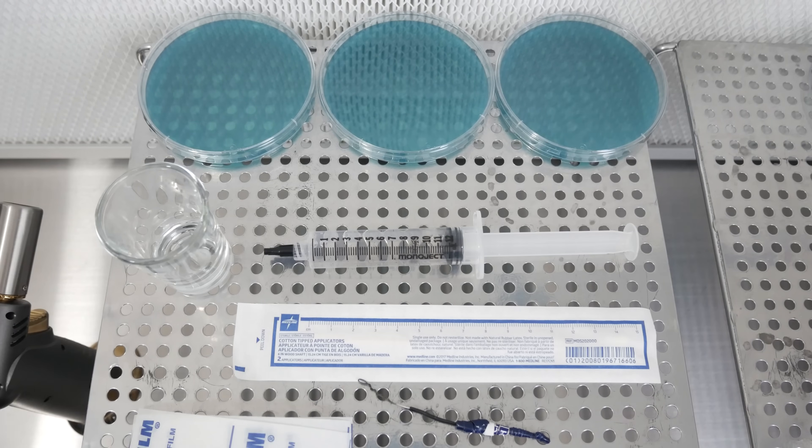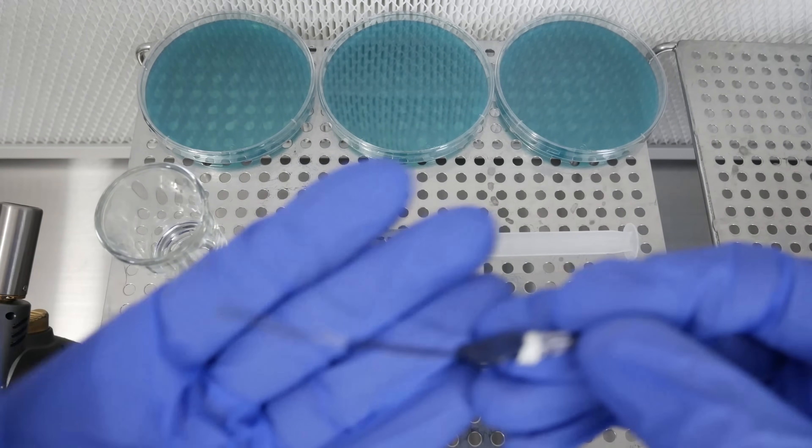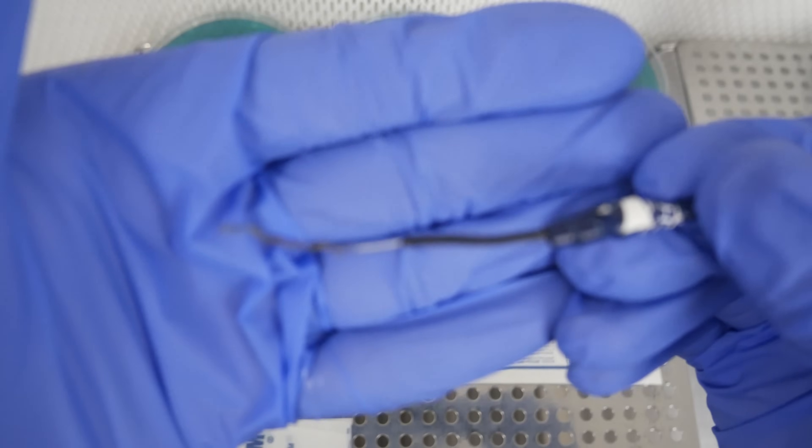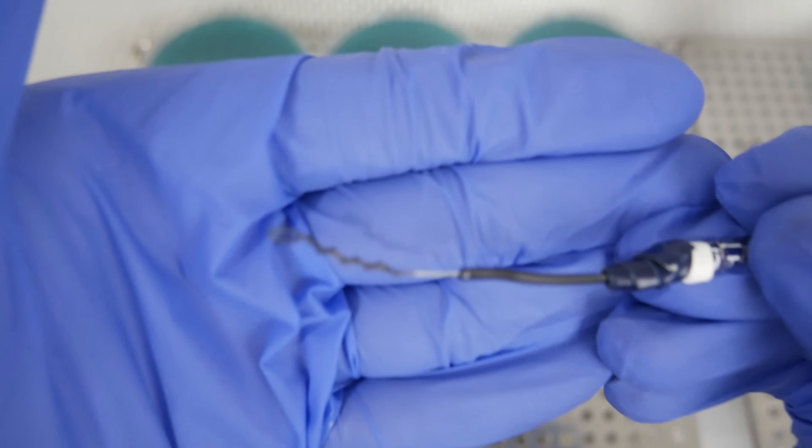One of the tools that I'm going to be using to inoculate is called the inoculation loop. You can purchase these for yourself under lab supply materials, but I went ahead and made my own out of a cheap twist tie.